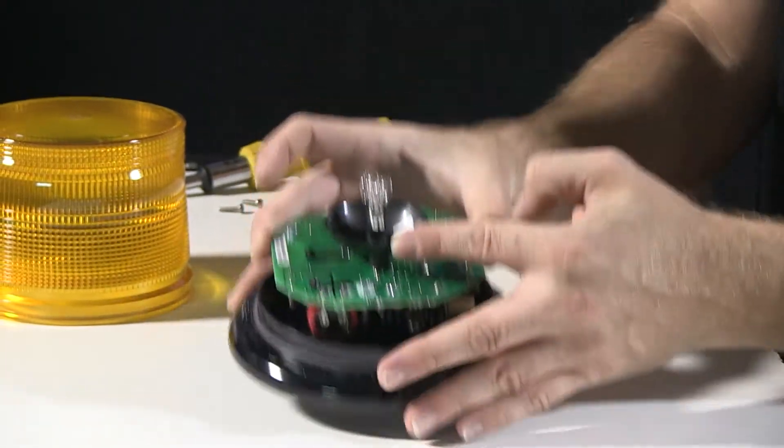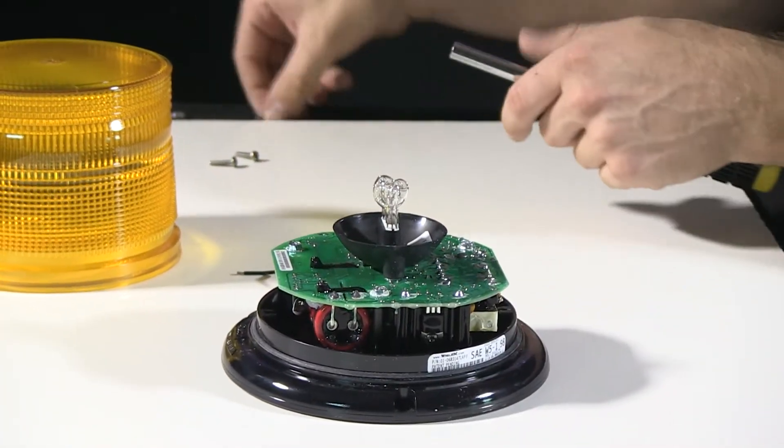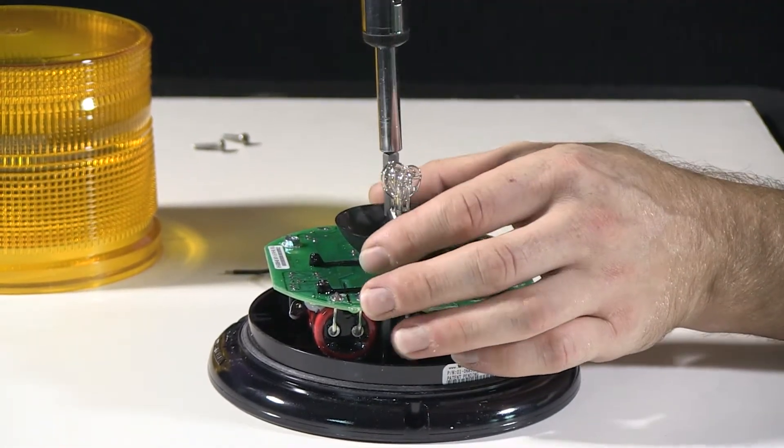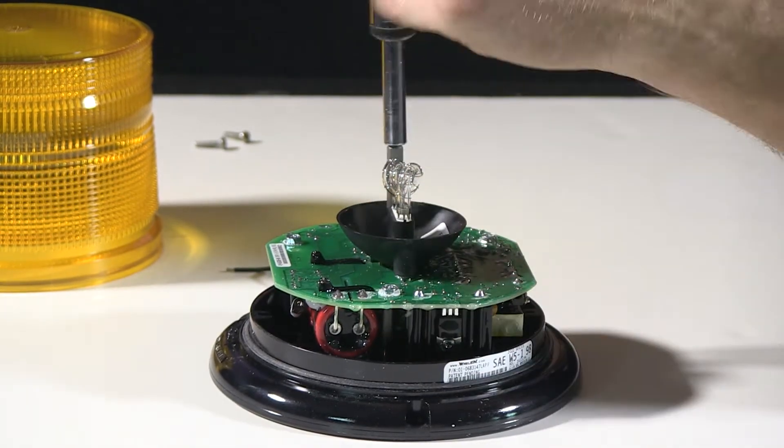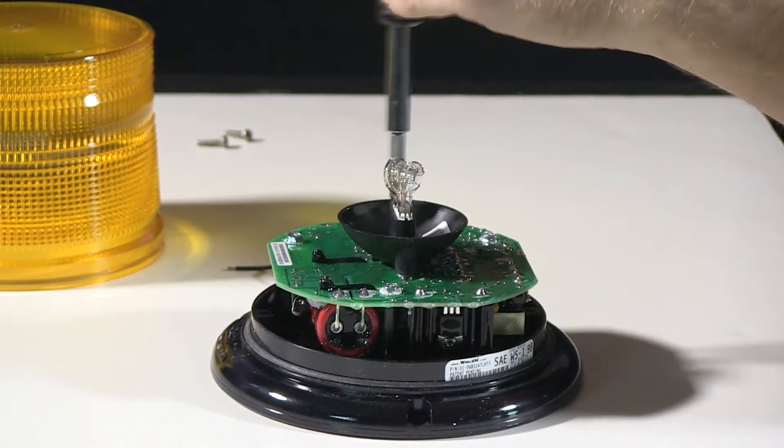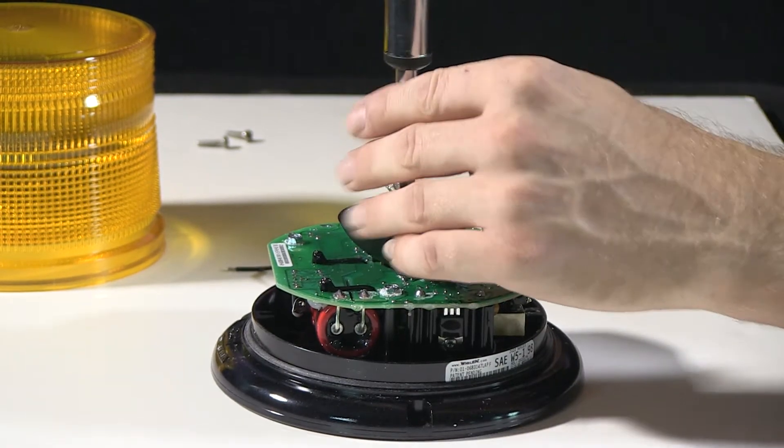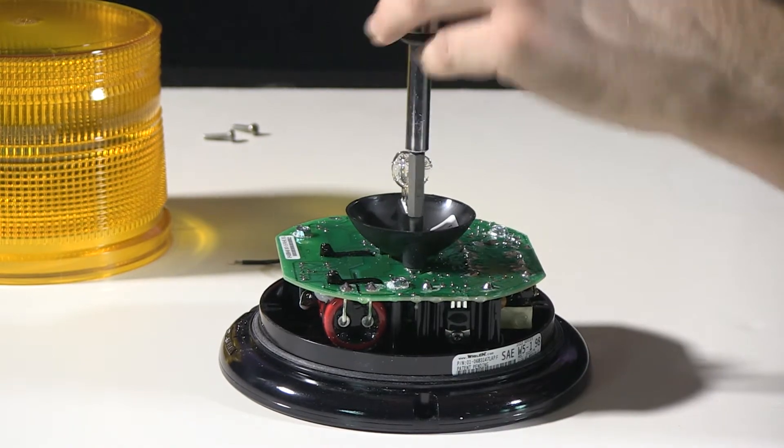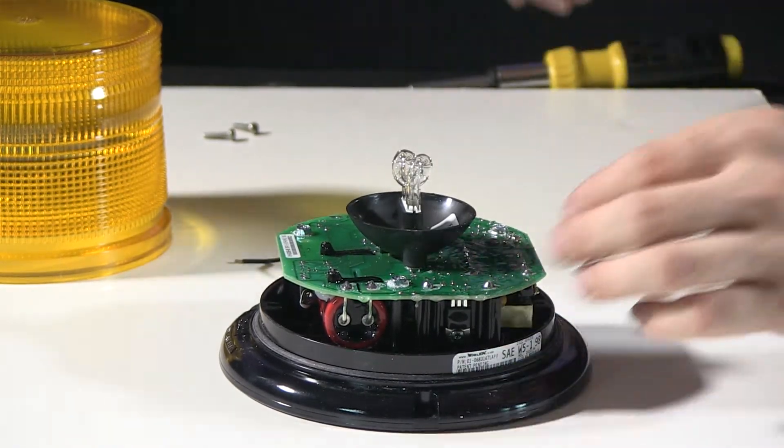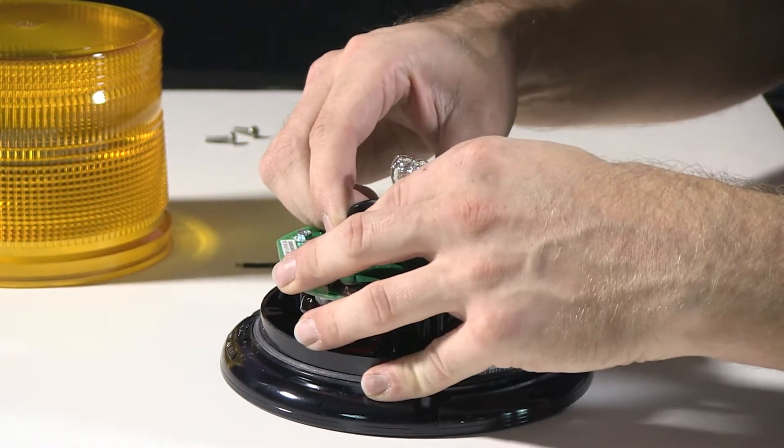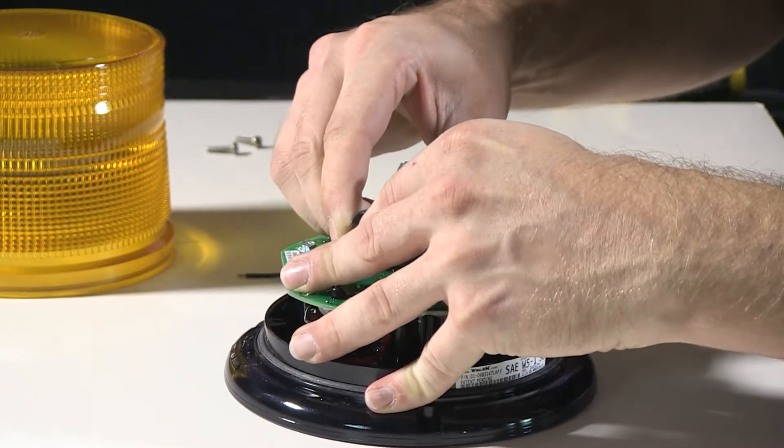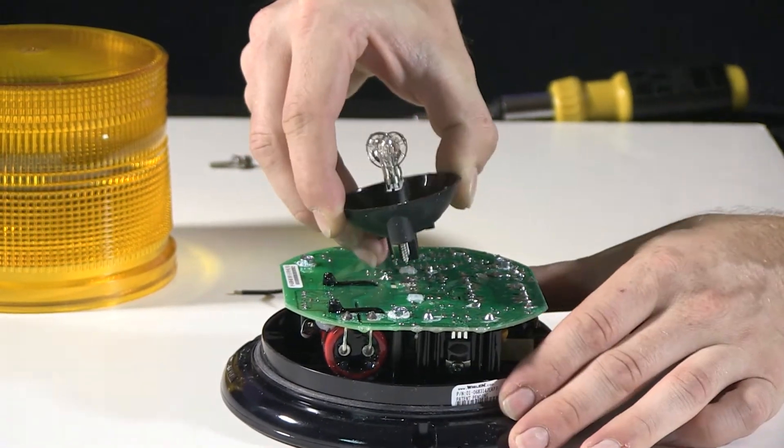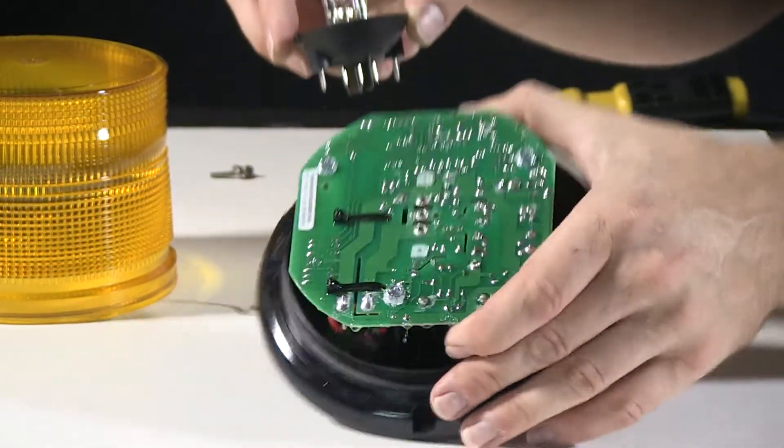The strobe tube here, if you need to replace them, is affixed into the power supply assembly with two small screws. With the screws loosened, again, wiggle the strobe tube free and slide it out from the power supply.